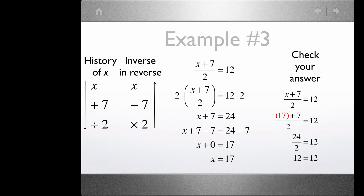Let's check that answer. We have x plus 7 over 2 equals 12. We substitute 17 for x, so we have 17 plus 7 divided by 2. That's 24 divided by 2, and that does equal 12. So our solution is correct.